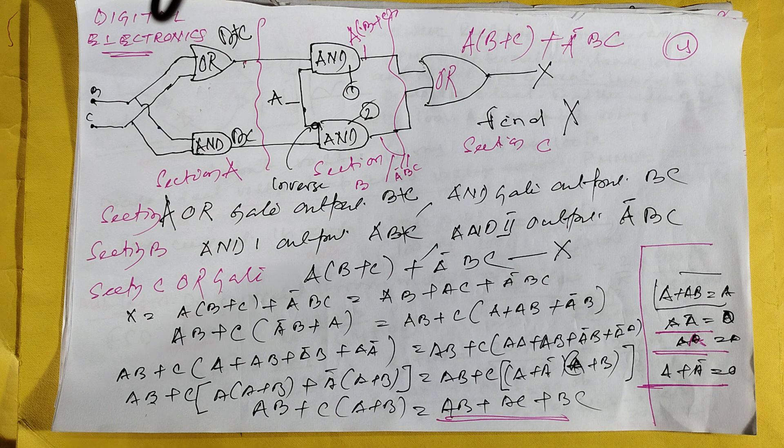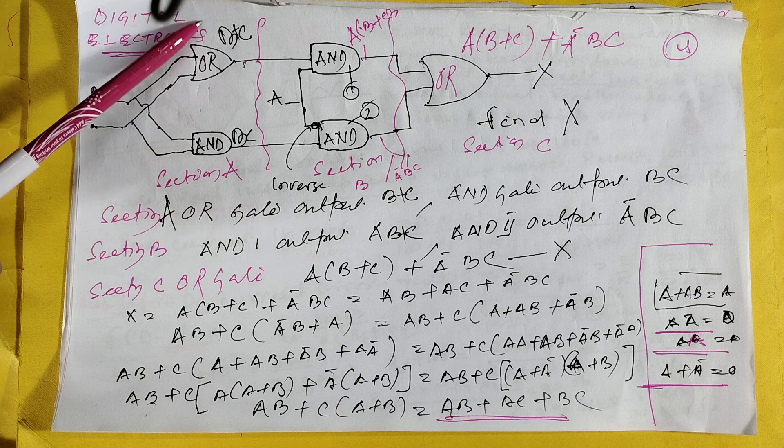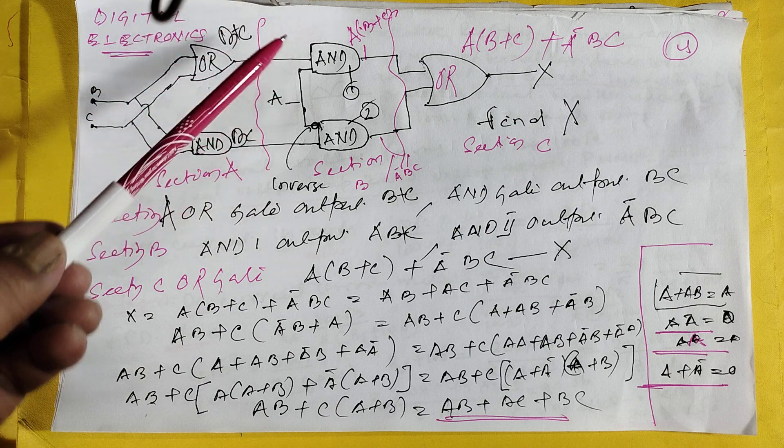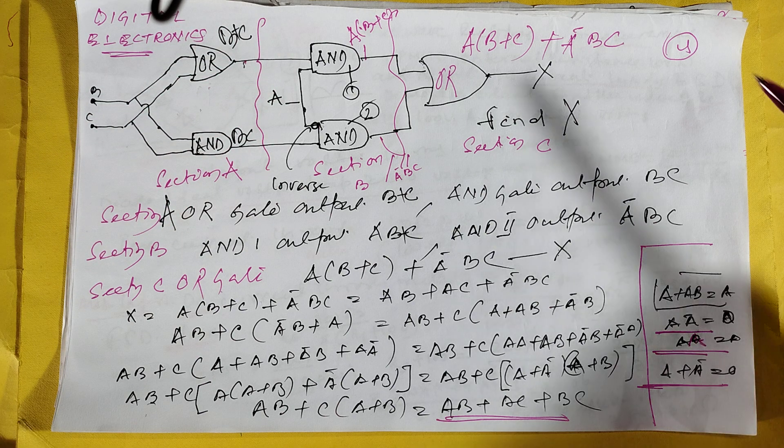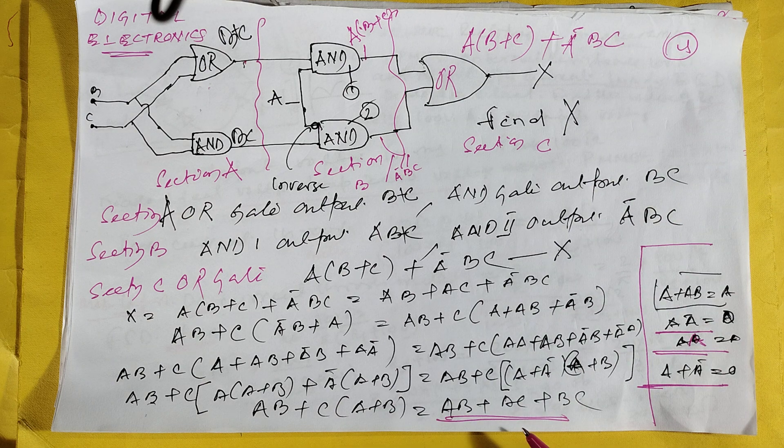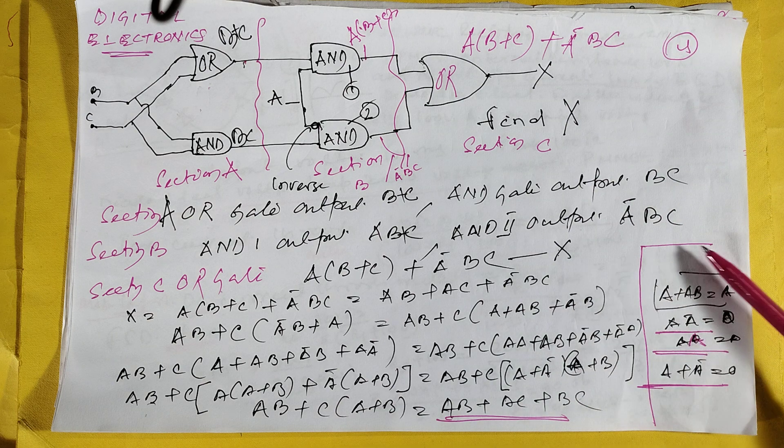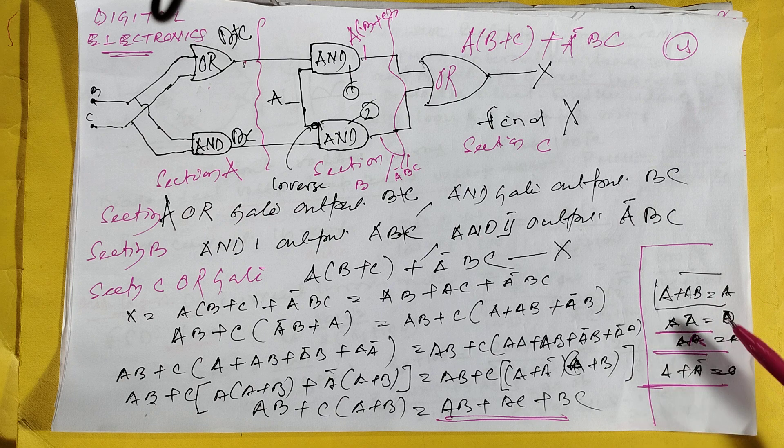This is a digital element. Every gate, I have put in the output, all gate outputs. This is the final output gate. But if you simplify, it is coming AB plus AC plus BC. How it is coming? A plus AB equals A. It is mentioned here.